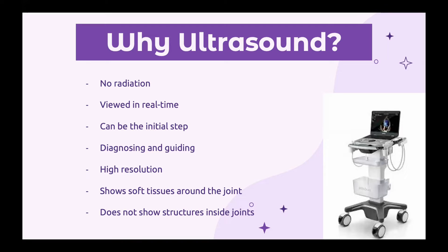Specifically for joints, ultrasound is useful because it has high resolution on the more superficial or shallow structures, and the soft tissue around the joints can be clearly viewed. It doesn't really show the structures inside the joints, though — that's when MRI is mainly used.